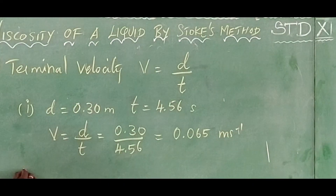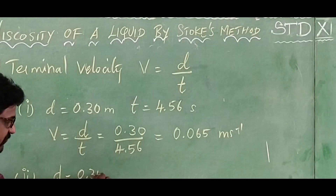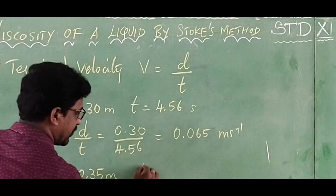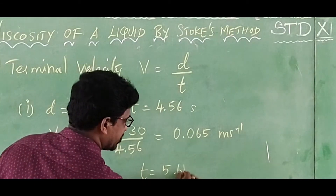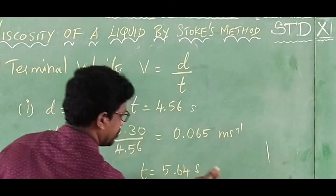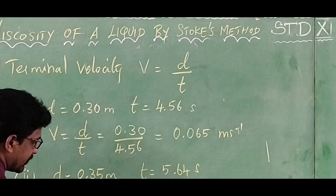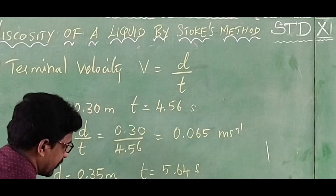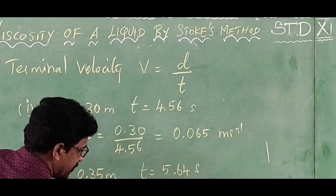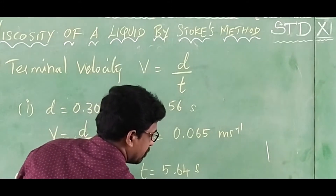For the second reading, the distance is 0.35 meters and the time taken is 5.64 seconds. The terminal velocity v₂ equals d divided by t, which is 0.35 divided by 5.64, which equals 0.062 meters per second.